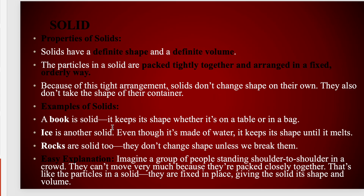A book is a solid — it keeps its shape whether it is on the table or in a bag. It will not change its shape according to its container. A book has its own definite shape and definite volume, and the particles that are the building blocks of this book are so tightly arranged that they will not allow the solid to change its shape on its own. Ice is another solid — even though it is made of water, it keeps its shape until it melts. Rocks are also examples of solids; they do not change shape unless we break them.